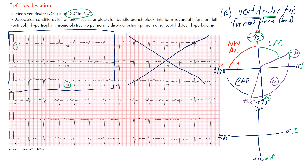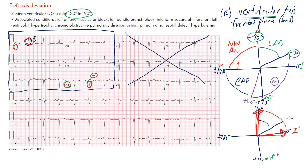Here's lead I — are these complexes mostly positive or negative? Notice this one is mostly positive, meaning above the baseline. Because it's mostly positive, the impulse is going towards the positive end of lead I. For aVF, this one is mostly negative — it's going away from the positive end of aVF. That means the axis lies somewhere between these two arrows, in this upper-left region.